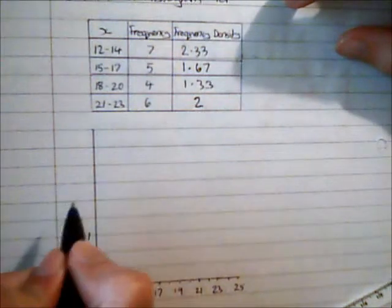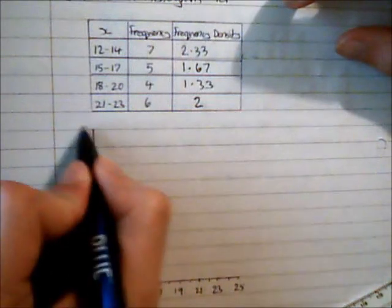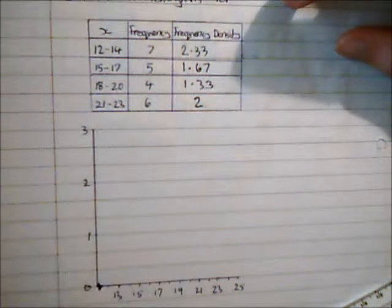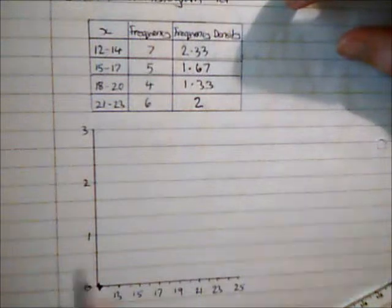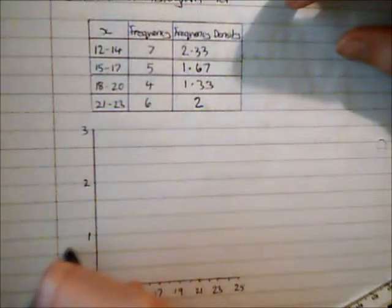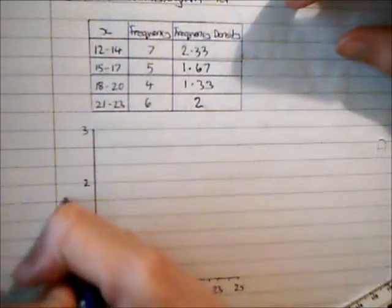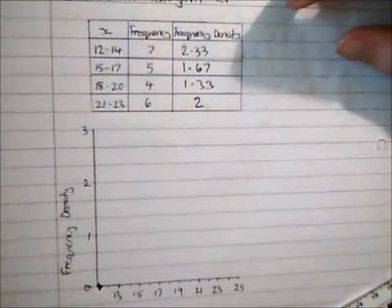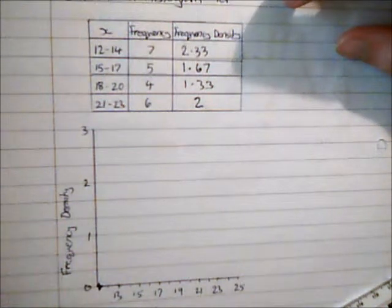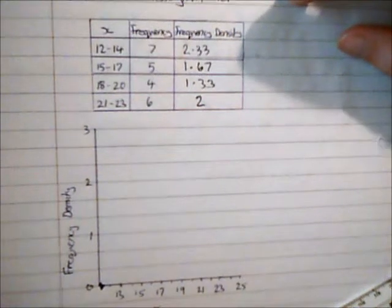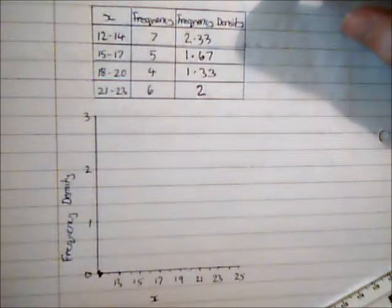So at the side I've got frequency density. If I have 1 and then 2 and then 3, then each of these lines in between represents a third. I'm just going to label that as frequency density, and here I have my values of x, which I have an unspecified measure here, so it's just called x.